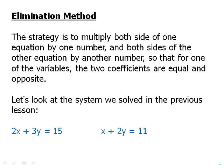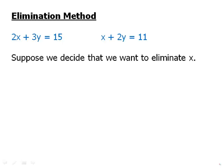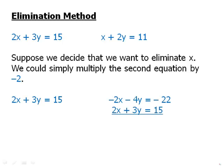Let's look at the system we solved in the previous lesson — a system we solved with substitution, which works well because we have the variable x with a coefficient of 1. We're going to solve this same system now with elimination, in two different ways. Suppose first we want to eliminate x. The very first step in elimination is choosing the variable we want to eliminate. A convenient way to eliminate x here is to multiply the second equation by negative 2. Then we add the two equations — the negative 2x and positive 2x cancel — and we get negative y equals negative 7. Multiply by negative 1, we get y equals 7. Then we plug in and solve for x.